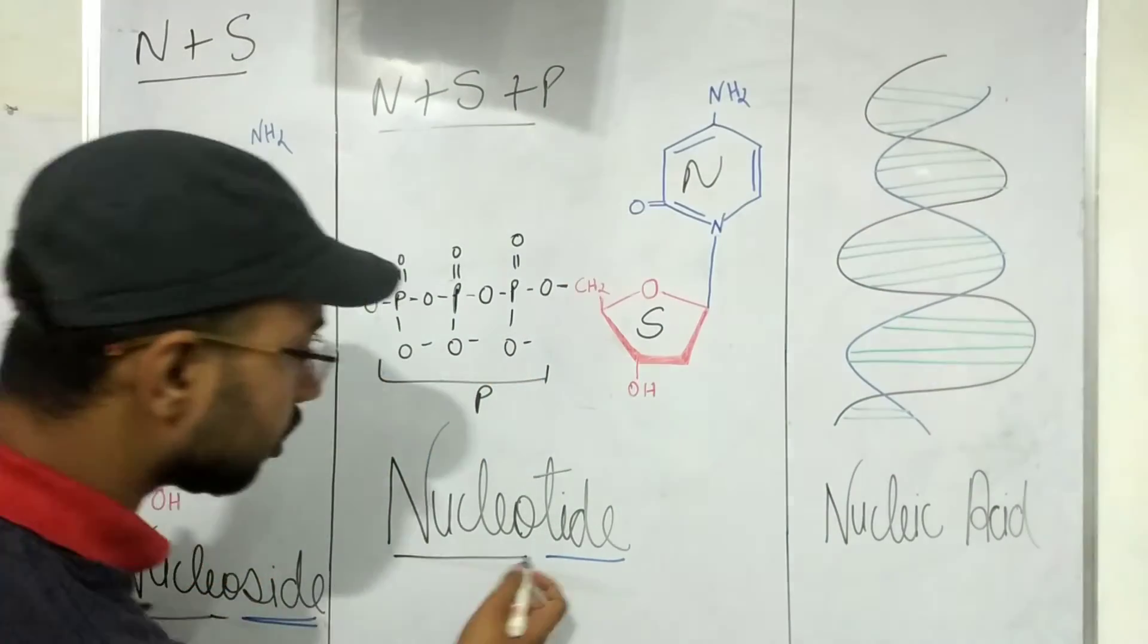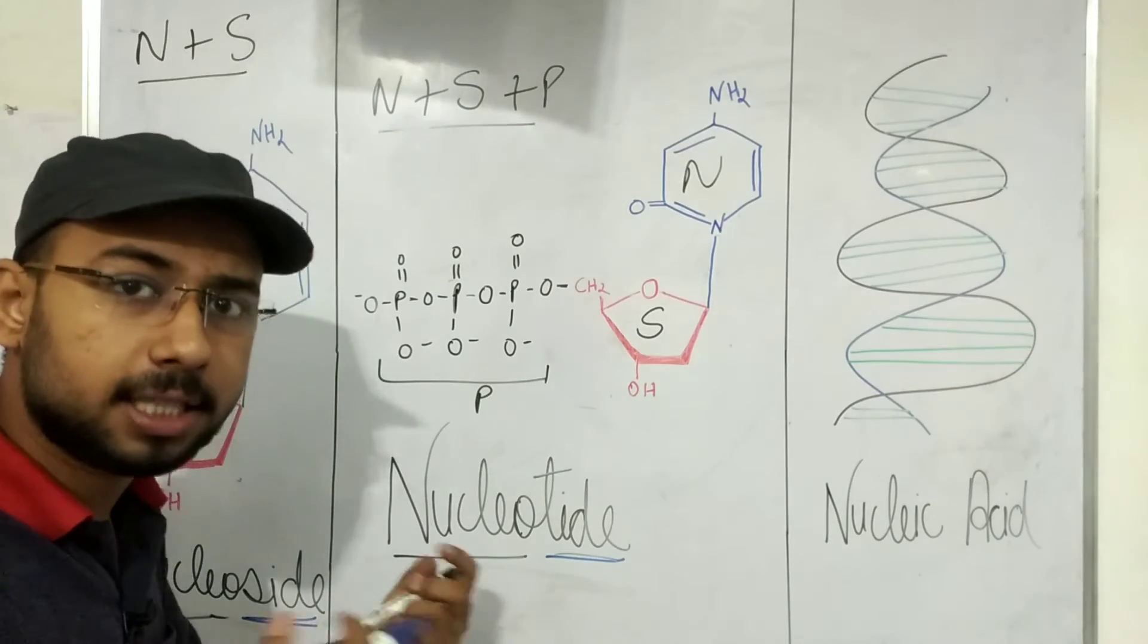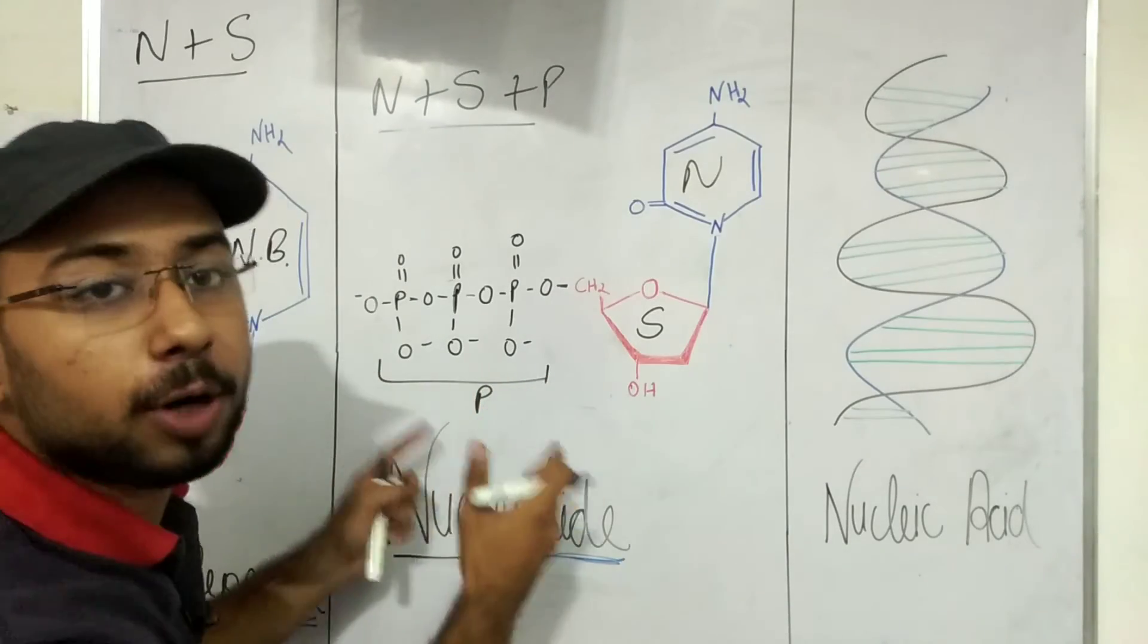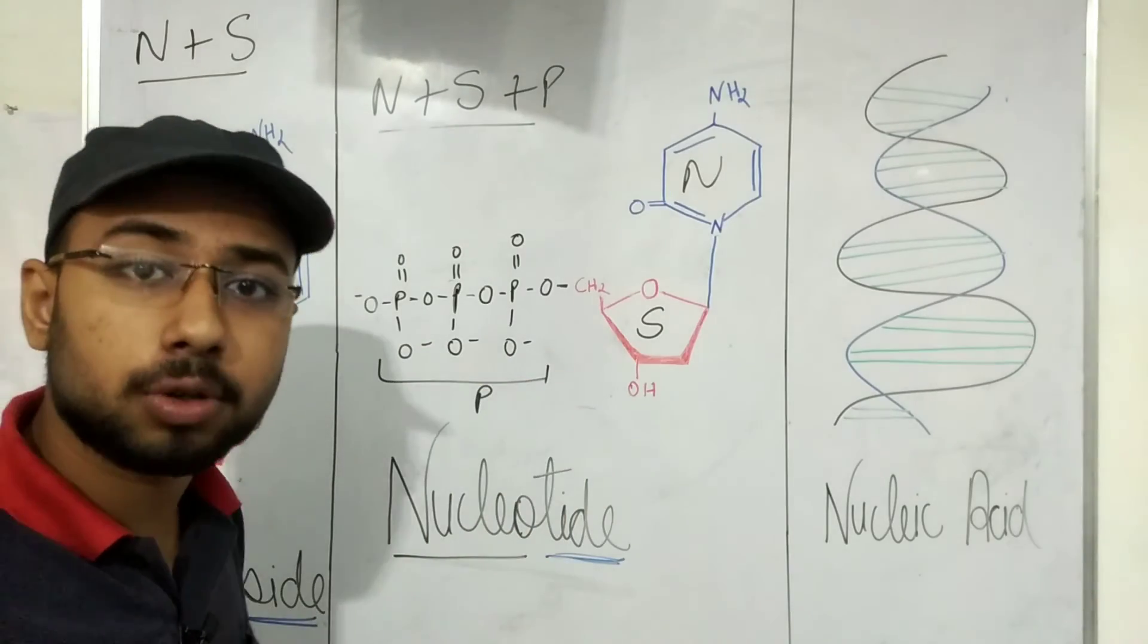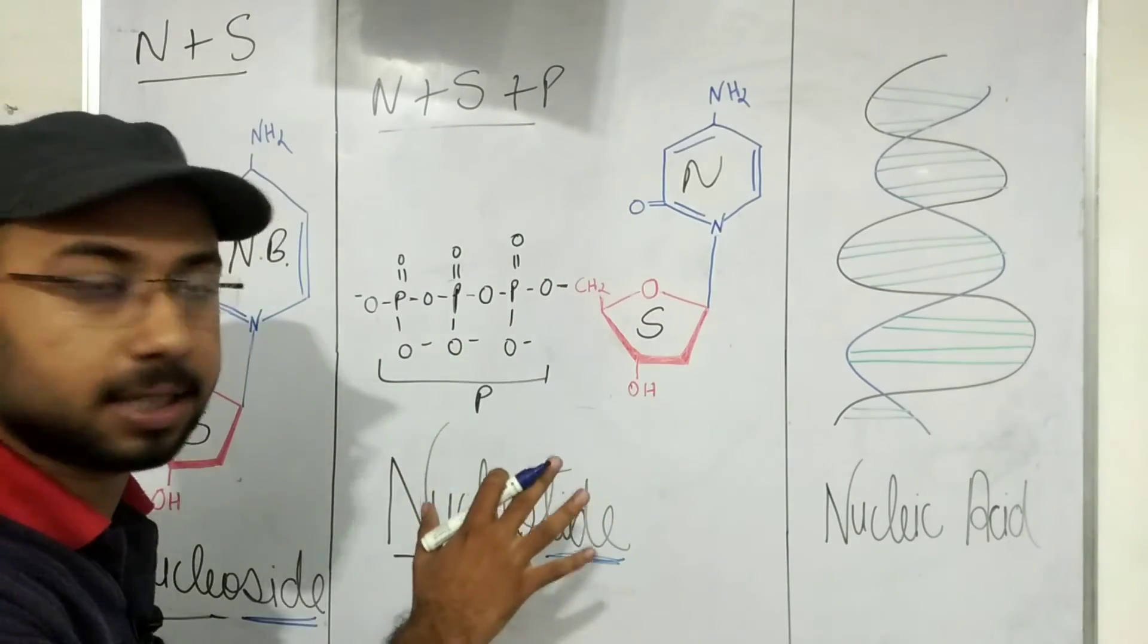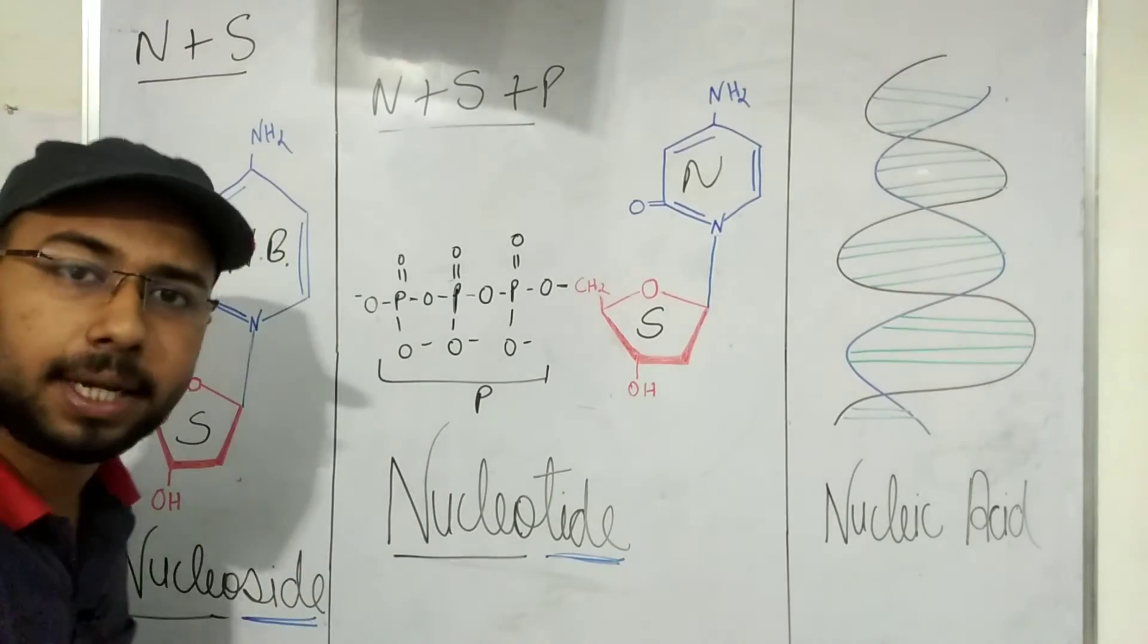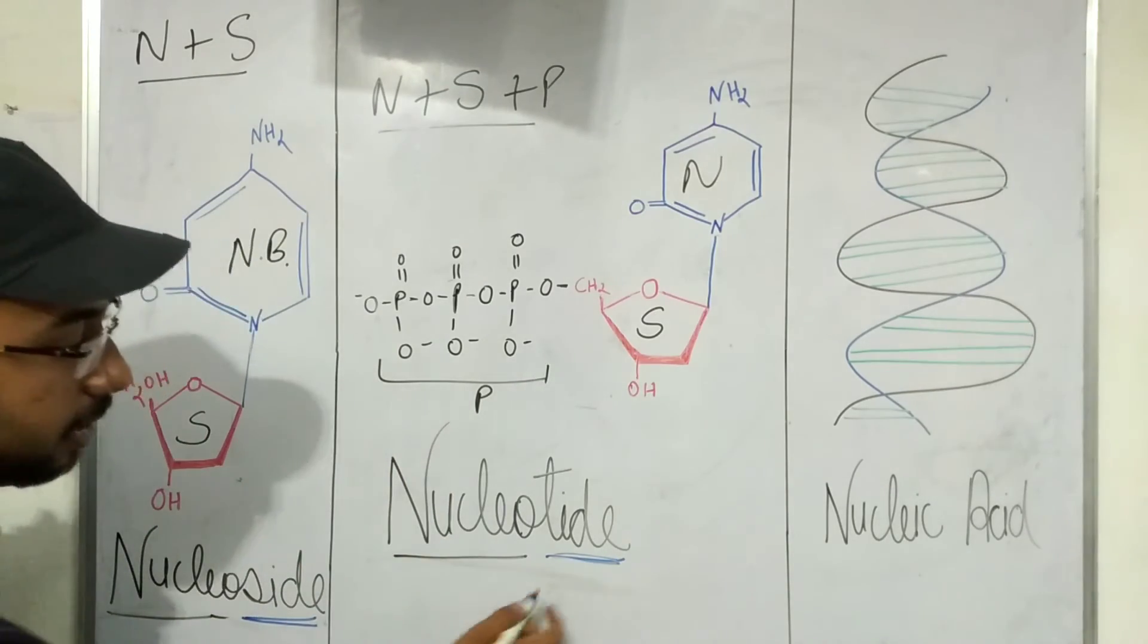Okay, while in the case of nucleotide, nucleotide, tide means bandha hua, it's totally closely packed. So it is totally packed, means that it is packed with phosphorus group or phosphate groups. So it is packed. So we have to imagine that it is packed, means that it is the combination, it is a complete structure known as nucleotide containing phosphorus group.